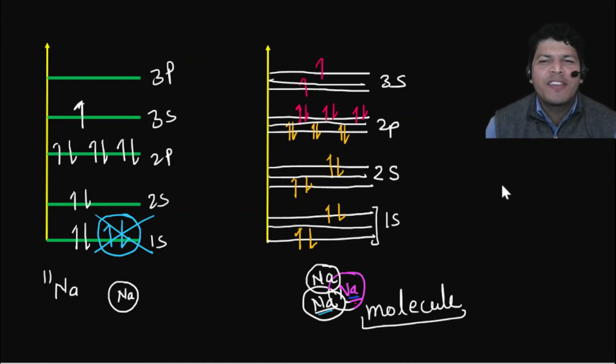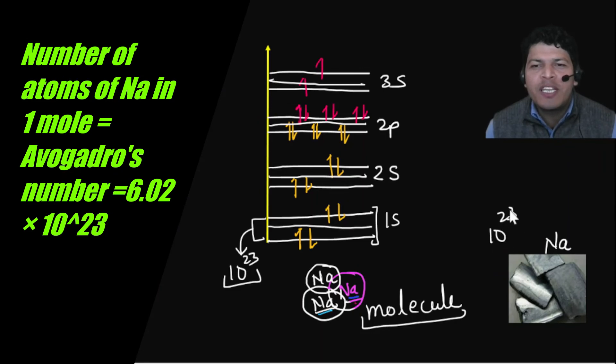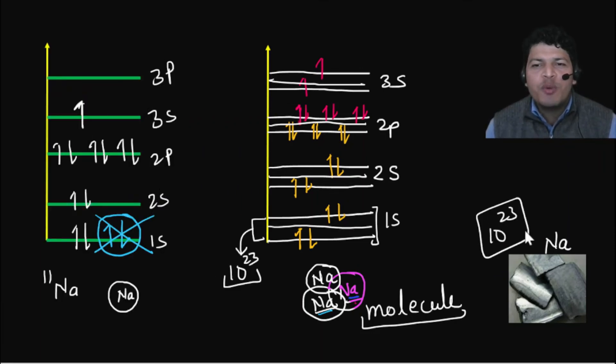What do you think when we have a sodium crystal? Then in this region, in this energy difference, we have to give 10 raise to power 23 states. Why? Because it will have 10 raise to power 23 atoms. So 10 raise to power 23 atoms means 10 raise to power 23 energy levels. Now in this small region, 10 raise to power 23 energy levels to be made in this energy difference.